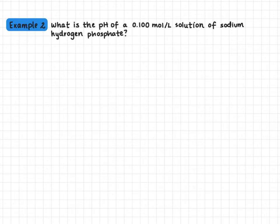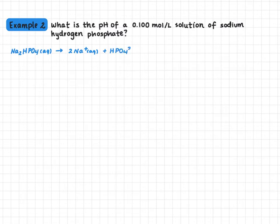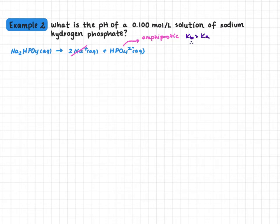Our second example is: what is the pH of a 0.1 mole per liter solution of sodium hydrogen phosphate? Sodium hydrogen phosphate is an ionic compound, so we first write the dissociation equation: Na₂HPO₄ dissociates into sodium and hydrogen phosphate. Sodium is a spectator ion, so we won't use it in our reaction. Hydrogen phosphate is amphiprotic. For this species, Kb is higher than Ka, so it's going to act as a base in water.